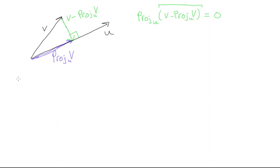So we'll say that the projection of v minus projection of v onto u, onto u, is equal to—we put this all in brackets—u times (v minus projection of v onto u) over u dot u, all times u.